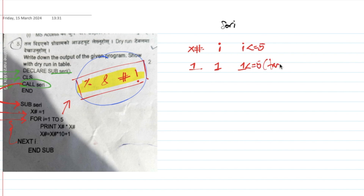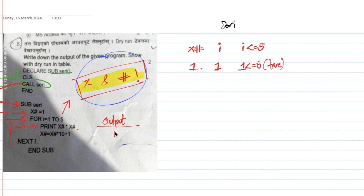1 is less than or equal to 5 — this is true. So we proceed. Print xx into xs. I have the output here. Print is called to produce output. xs is called to 1. So 1 into 1 is called to 1.